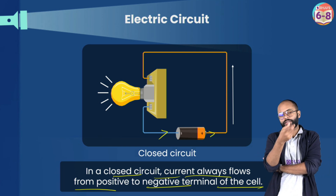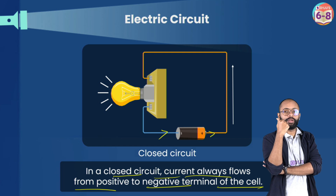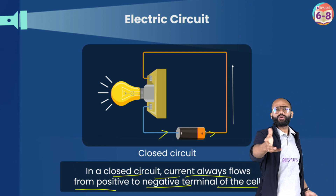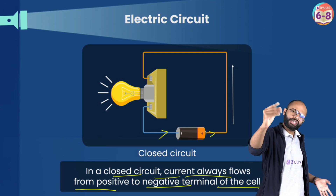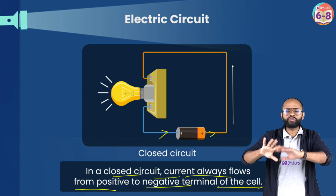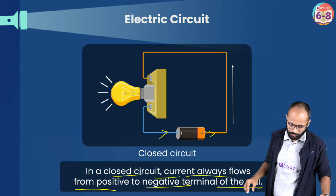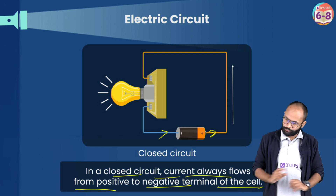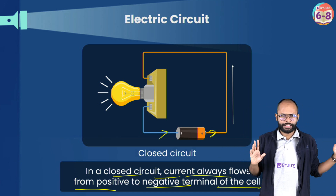When these theories were made, people thought it was a positive charge flowing, and many theories were built on that. Later, Sir J.J. Thomson discovered the electron and found that electrons actually flow. But since so many theories were already based on positive flow, scientists decided to keep the conventional current direction as it was — positive to negative — and everything still worked fine. So: current flows from positive terminal to negative terminal.